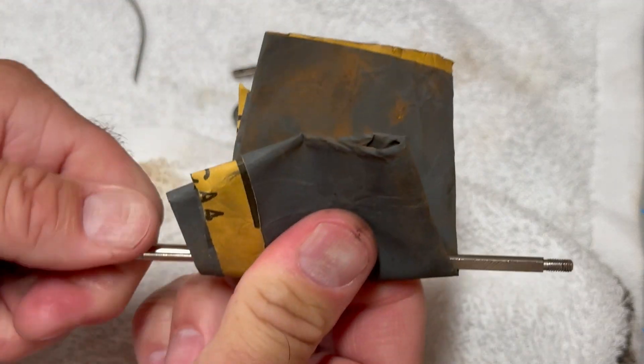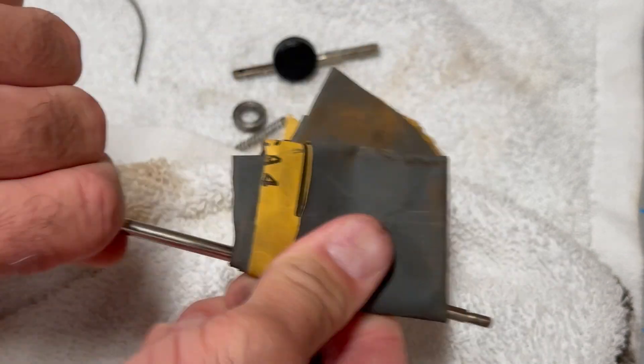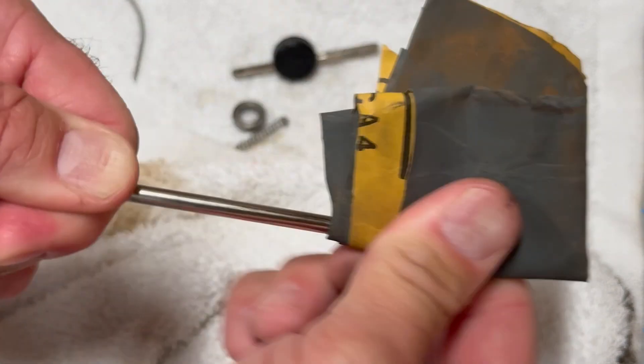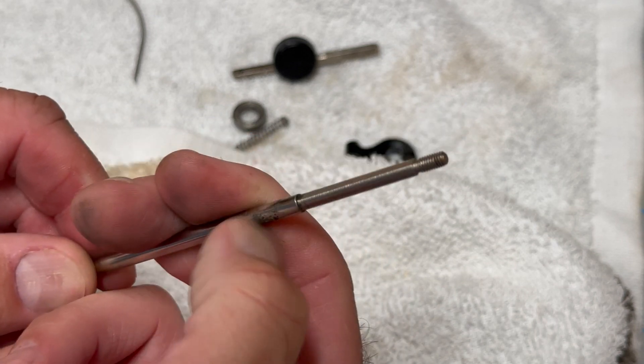That may be a tiny bit of pitting on this shaft here. I'm going to try this with some 1,000 grit sandpaper and see if it's pitting or if it's just crud that's really stuck on there. Yeah, that's probably a little bit of pitting to the chrome finish on this rod here.